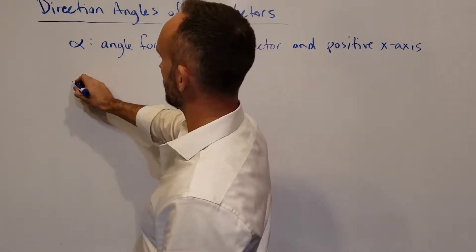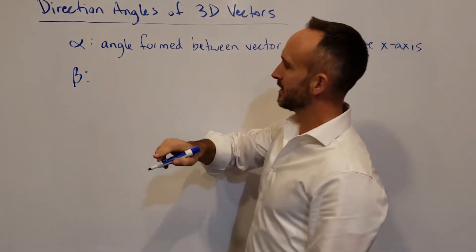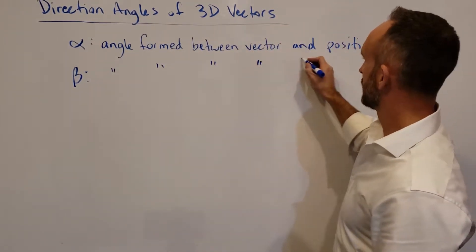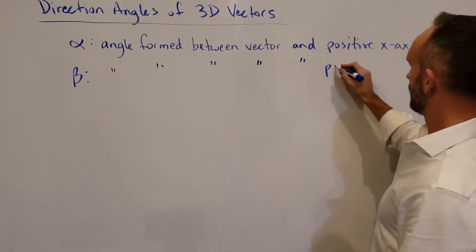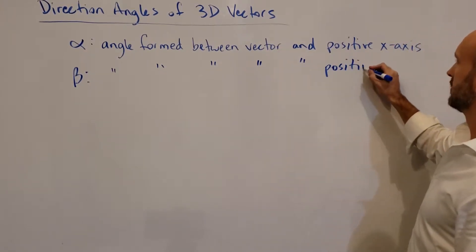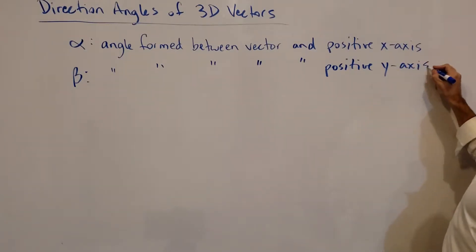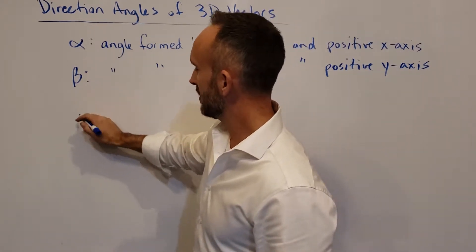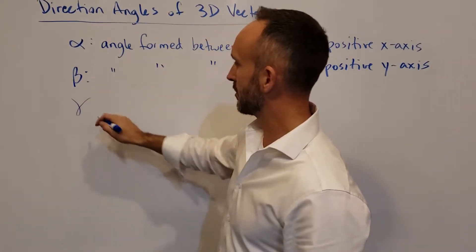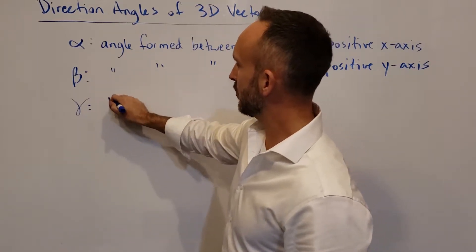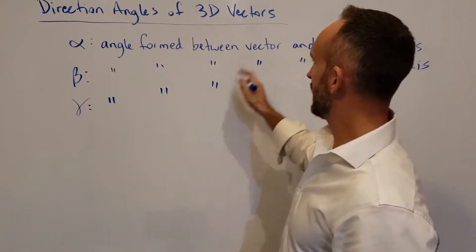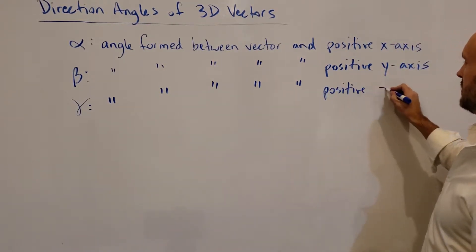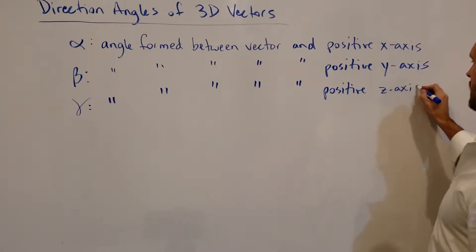These are defined in terms of some given vector. The next one is beta. Beta is the angle formed between the same vector and the positive y-axis. And then the last one is gamma. Gamma is the angle formed between the given vector — still the same vector — and the positive z-axis.